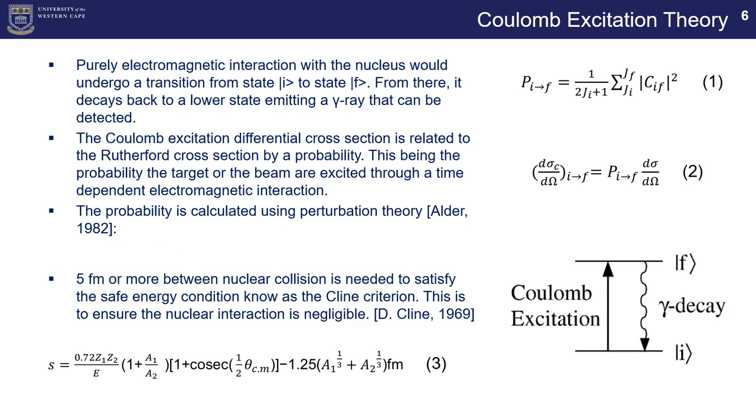All right, following that we're just going to look at a bit on the theory for Coulomb excitation. Okay, so what exactly is Coulomb excitation? Coulomb excitation is a purely electromagnetic interaction with the nuclei, particularly ones that are being scattered off each other, and it's an inelastic collision in which the transition from the first state to the final state occurs due to the energy that is imparted on the projectile onto the target during the inelastic collision. From there it decays back down to a lower state emitting a gamma ray that can be detected and this is what we do during the experiment.